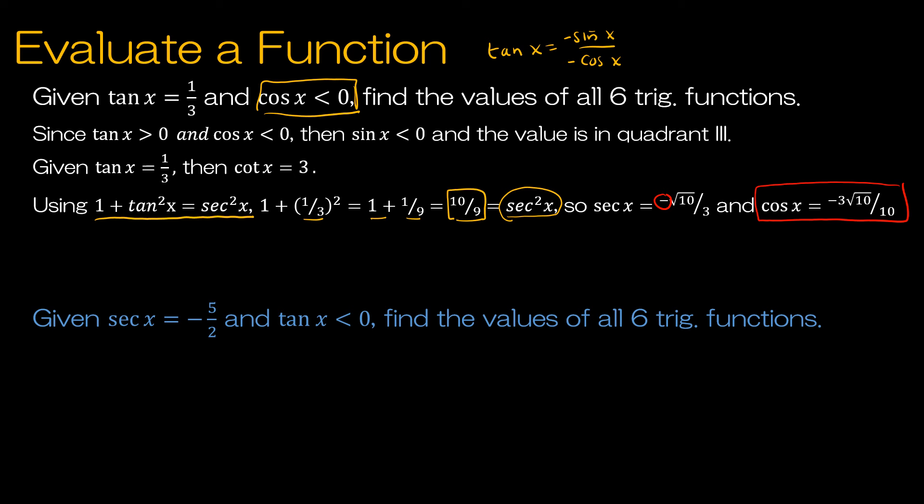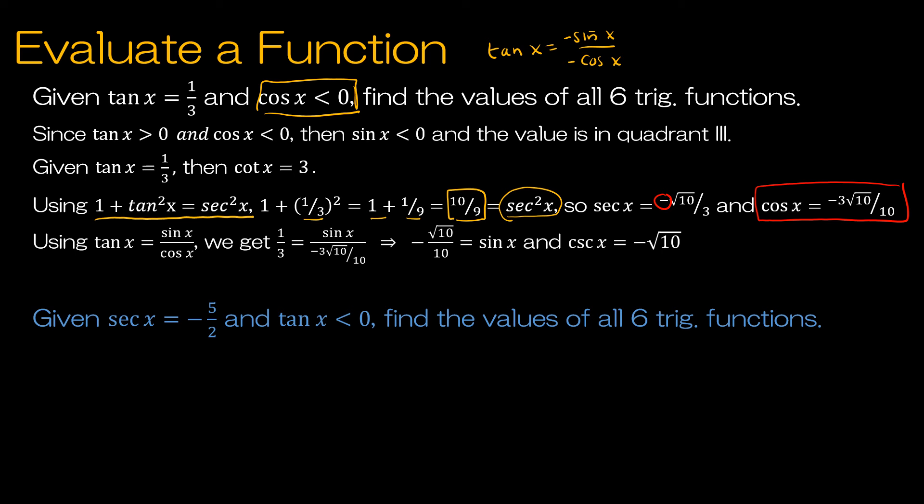For sine, I use the fact that tangent x equals sine divided by cosine. Replacing tangent with one-third and cosine with negative 3 radical 10 over 10, I cross-multiply to solve for sine. Dividing each side by 3 gives sine of x equals negative radical 10 over 10. Flipping that gives cosecant of x. Note that both are negative since we determined sine had to be negative.